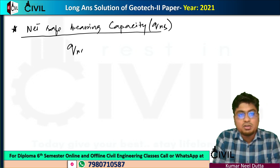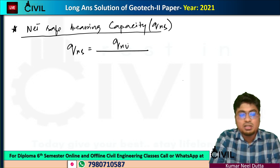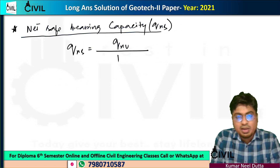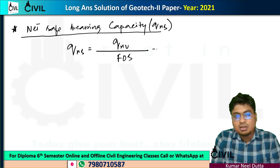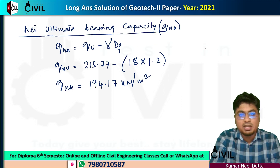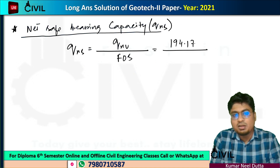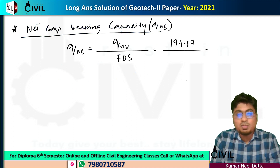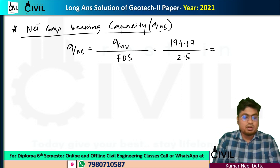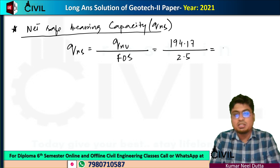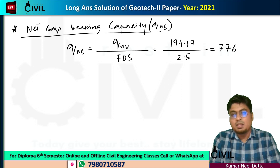QNS equals QNU divided by factor of safety. QNU equals 194.17 kN/m². The factor of safety is 2.5. So QNS equals 194.17 divided by 2.5, which gives 77.668 kN/m².